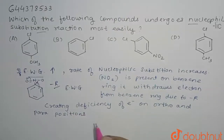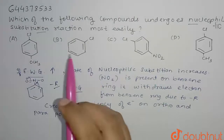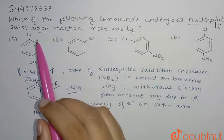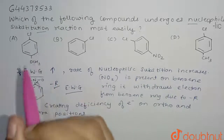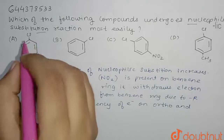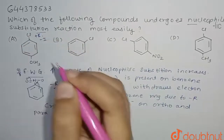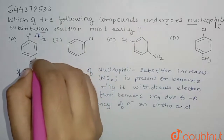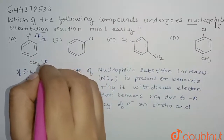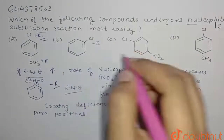Let us look at all the options. In option A, we have Cl and OCH3 present on the benzene ring. Cl shows plus-R effect and also minus-I effect; OCH3 shows plus-R effect. In option B, we have only Cl, which shows minus-I effect.